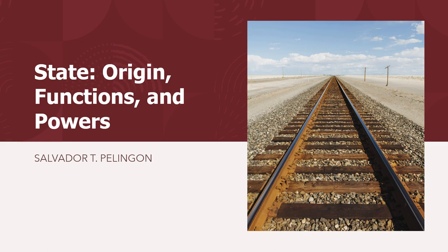Previously, we discussed state definition and its elements. As a review, a state is a community of persons, more or less numerous, permanently occupying a definite portion of territory, independent from outside or external control, and possessing a government wherein a great body of the inhabitants renders habitual obedience. From this definition we get the four elements: people, territory, government, and sovereignty.